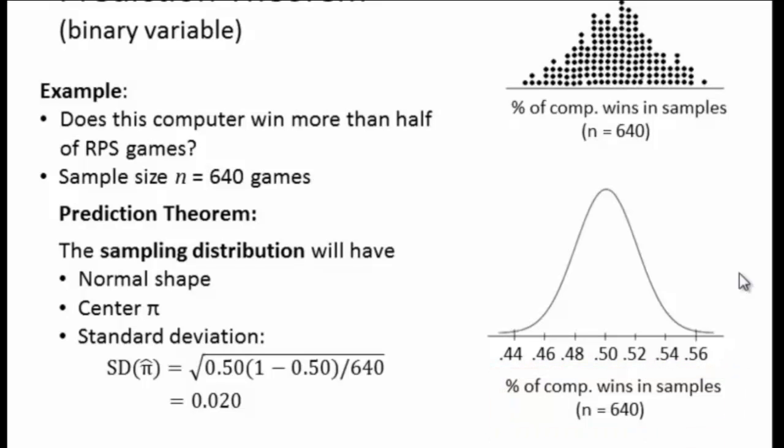And now you know—this is really for the next chapter—but what you know is that you can now say things like, 68% of all samples would have a percentage of computer wins somewhere between 48% and 52%. So we could use the empirical rule, we could use the normal table to say what kinds of samples would be rare, what kinds of samples would be typical. That's the way we're going to use this when we apply it to significance testing. That's it for now, thank you.